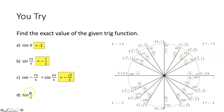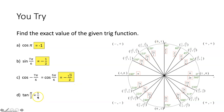Lastly, evaluate tangent of π over 2. We locate π over 2 radians on the unit circle. Tangent equals the y-coordinate over the x-coordinate of the corresponding point. In this case, that would be 1 over 0. Anytime your denominator is equal to 0, your answer is undefined.